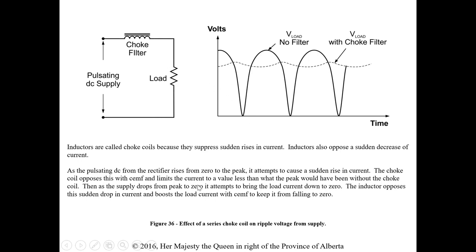As the pulsating DC from the rectifier rises, the choke coil opposes the sudden rise with CEMF. Then as the supply drops from peak toward zero, it attempts to bring load current down to zero. The inductor opposes the sudden drop and boosts load current with CEMF to keep it from falling to zero. The load sees a smoother output with the filter than without.